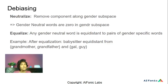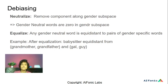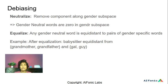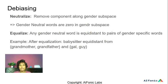Once biased embeddings are identified, two strategies are used to de-bias them. The first is neutralize: remove the component along the gender subspace so that gender-neutral words have zero projection onto the gender subspace. The second is equalize: ensure any gender-neutral word is equidistant from pairs of gender-specific words. They define a class of gender-specific word pairs — grandmother/grandfather, girl/guy, she/he, woman/man, and so on. For a word like babysitter, it needs to be equidistant from grandmother as from grandfather, and equidistant from girl as from guy.